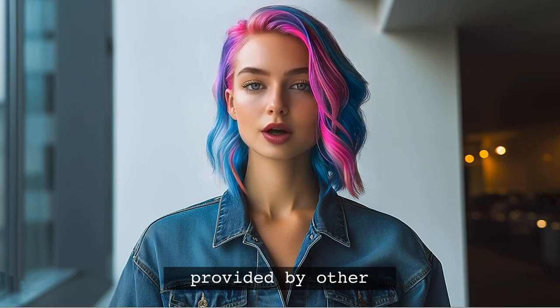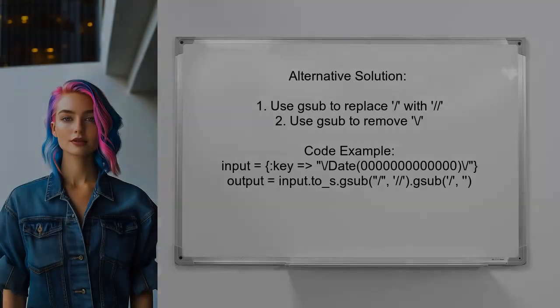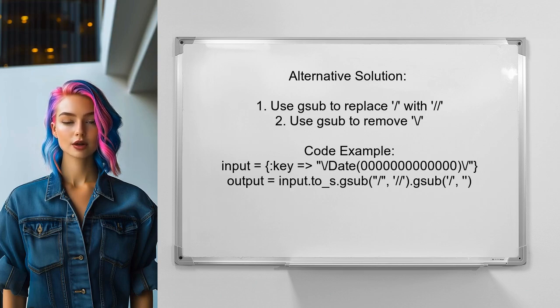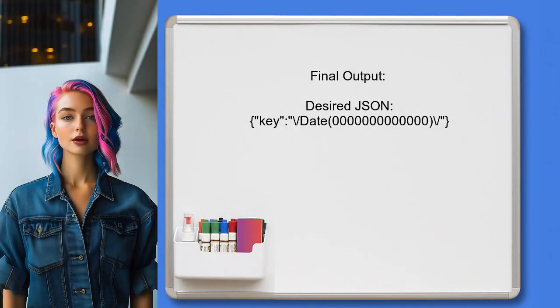Now let's look at the answers provided by other users. An alternative solution suggests a simple approach using the GSub method. They recommend first replacing each forward slash with a double forward slash and then removing the escaped forward slashes. This method transforms the input to the desired JSON format, ensuring the slashes are correctly displayed as needed.